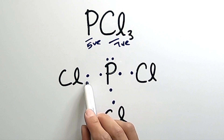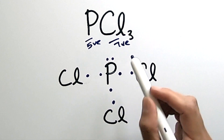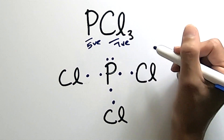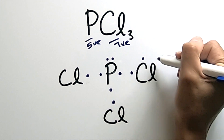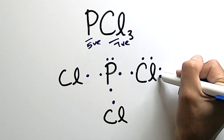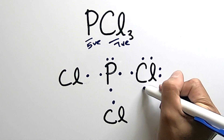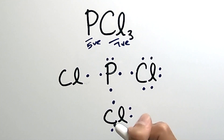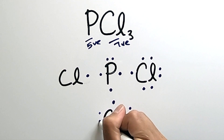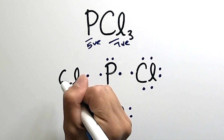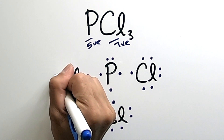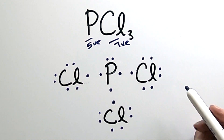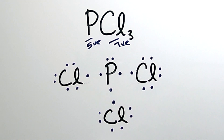Each chlorine atom has one valence electron contributed, and they have seven total, so we'll put the other six as three lone pairs on each chlorine. We do the same for all three chlorine atoms. There you have it — we have the same Lewis dot structure that we saw previously, just a different way of doing it.